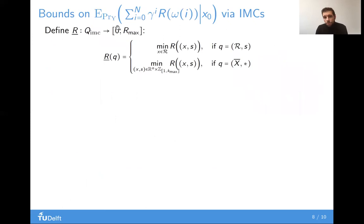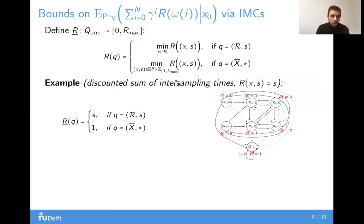To obtain bounds on our expectations, we equip the IMC with a reward which is defined as follows. For states R, s, it admits the value that is the minimum of the actual reward of x, s over all x in R and over all s from 1 to Kmax. So to give an example here, in the sum of inter-sampling times example where the reward is just s, every state R, s admits the reward s, as you see here, and the state X complement admits the reward just 1.